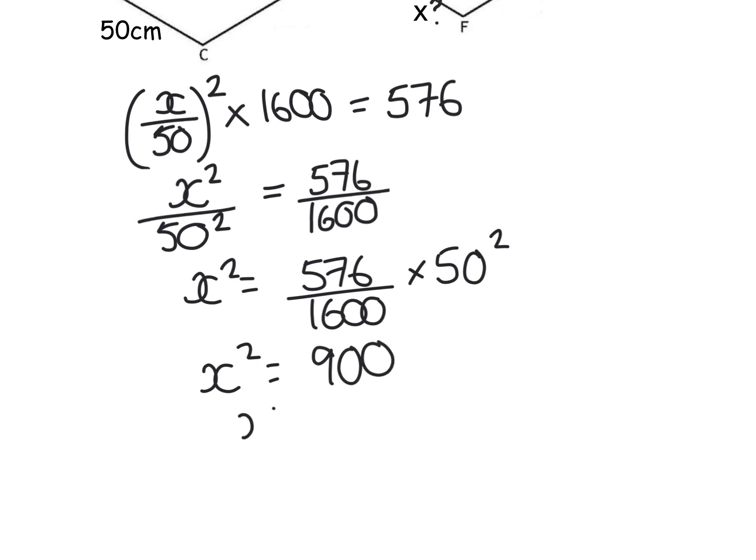And of course, that's what x squared was. So I need to square root of 900, which is 30. So the missing side was 30 centimetres on that one.